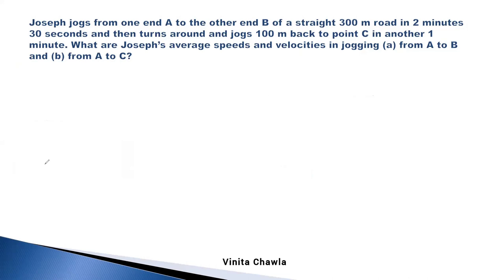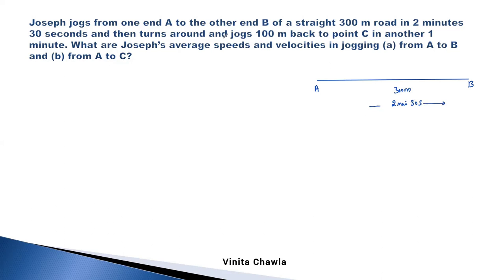Joseph jogs from one end A to the other end B of a straight 300-meter road and takes 2 minutes and 30 seconds. He then turns around and jogs 100 meters back to point C in another 1 minute. We have to find Joseph's average speed and average velocity for jogging from A to B and from A to C.